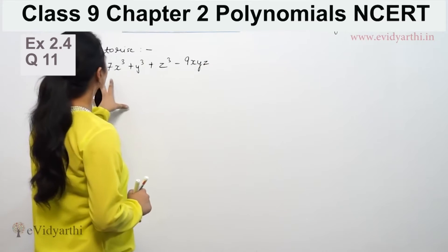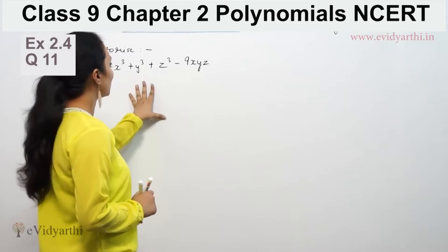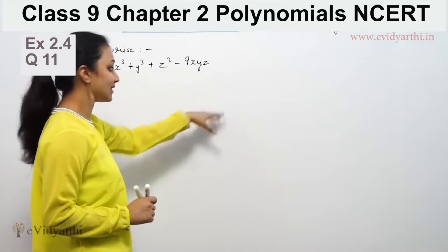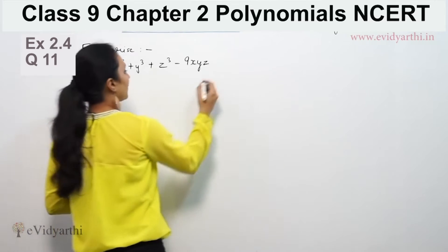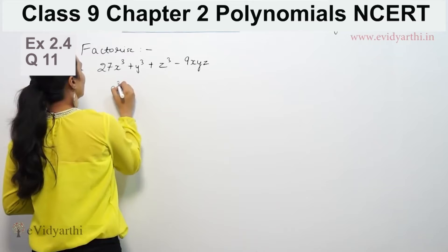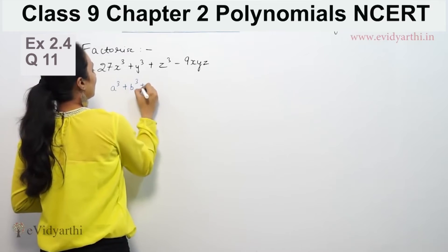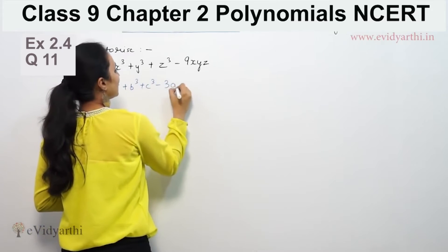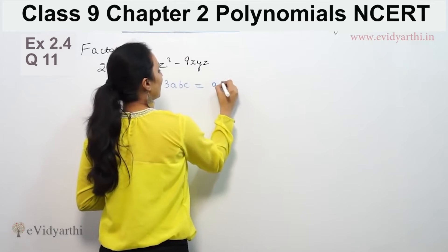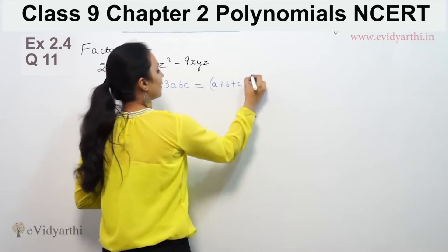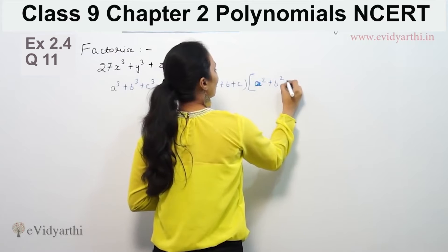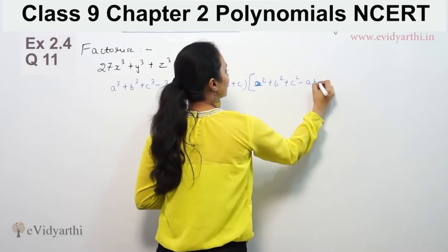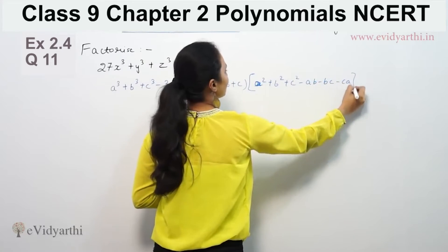It says factorize 27x³ + y³ + z³ - 9xyz. So we have an identity which is a³ + b³ + c³ - 3abc is equal to (a + b + c) times (a² + b² + c² - ab - bc - ca).